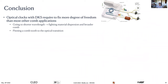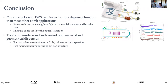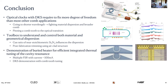In conclusion, implementing optical atomic clocks with DKS requires fixing more degrees of freedom than usual: shorter wavelengths and pinning the comb tooth to the optical transition. We developed a toolbox to understand and control both material and geometrical dispersion — gas ratio is critically important for growing silicon nitride combs, and post-fabrication trimming compensates for thickness discrepancies across a full wafer. We also demonstrated a buried heater for efficient integrated thermal tuning to pin the comb tooth to the optical transition.